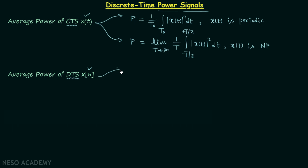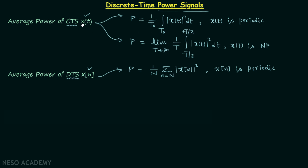When x(n) is periodic, the average power P is equal to 1 over N times the summation over N of |x(n)|². We use this formula when the discrete time signal x(n) is periodic. Comparing with the continuous time formula, in place of T0 (the fundamental time period of x(t)) we have N, the fundamental period of x(n). We perform summation instead of integration, as is standard for discrete time signals, and x(t) is replaced by x(n).